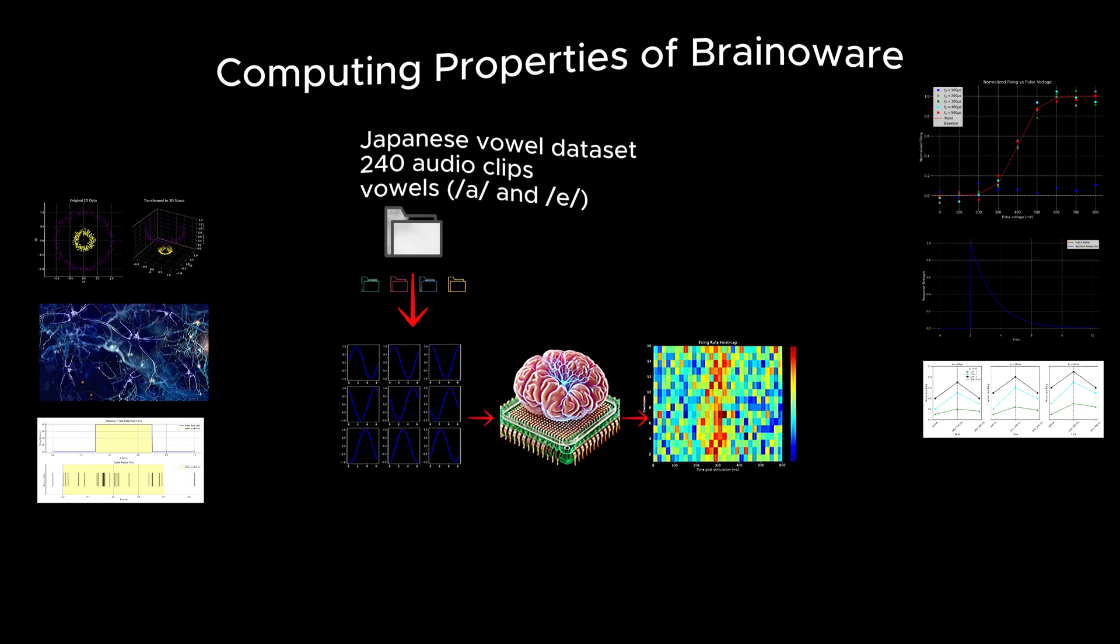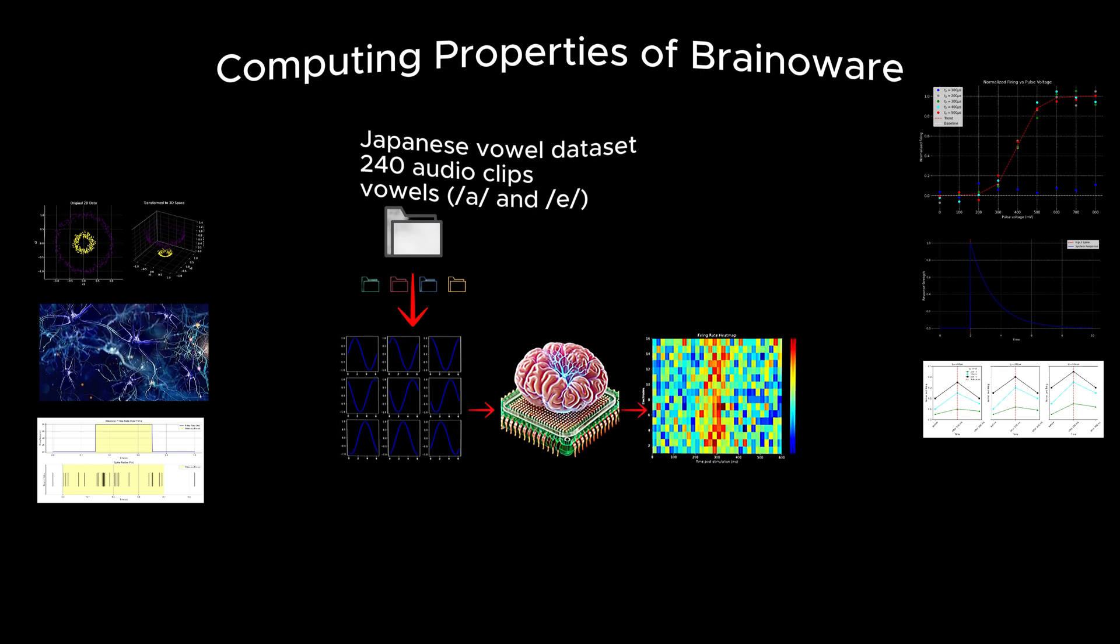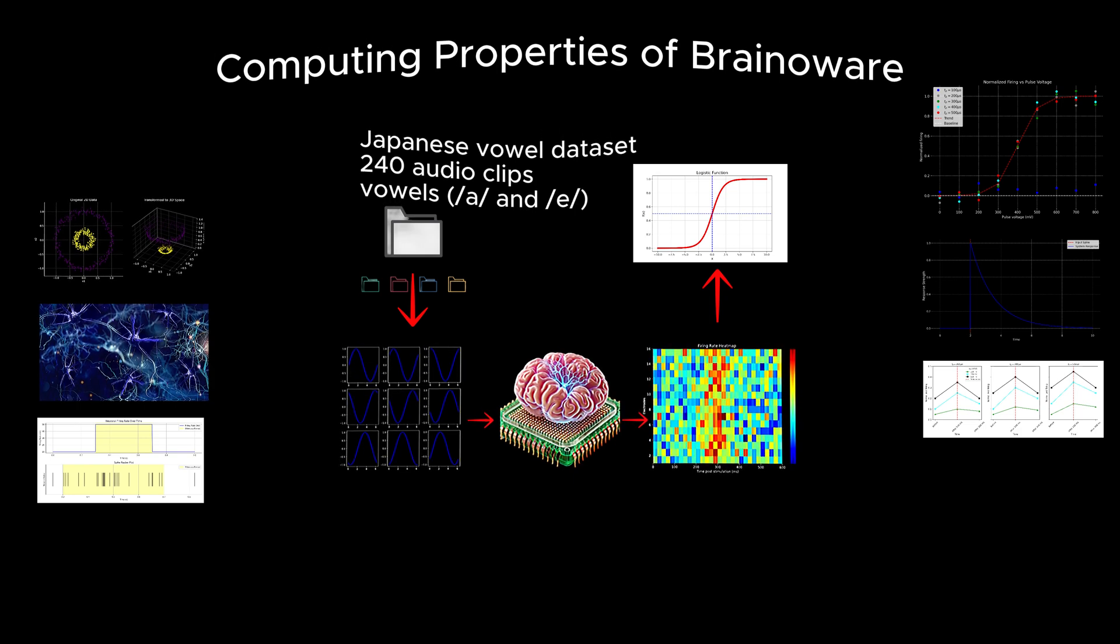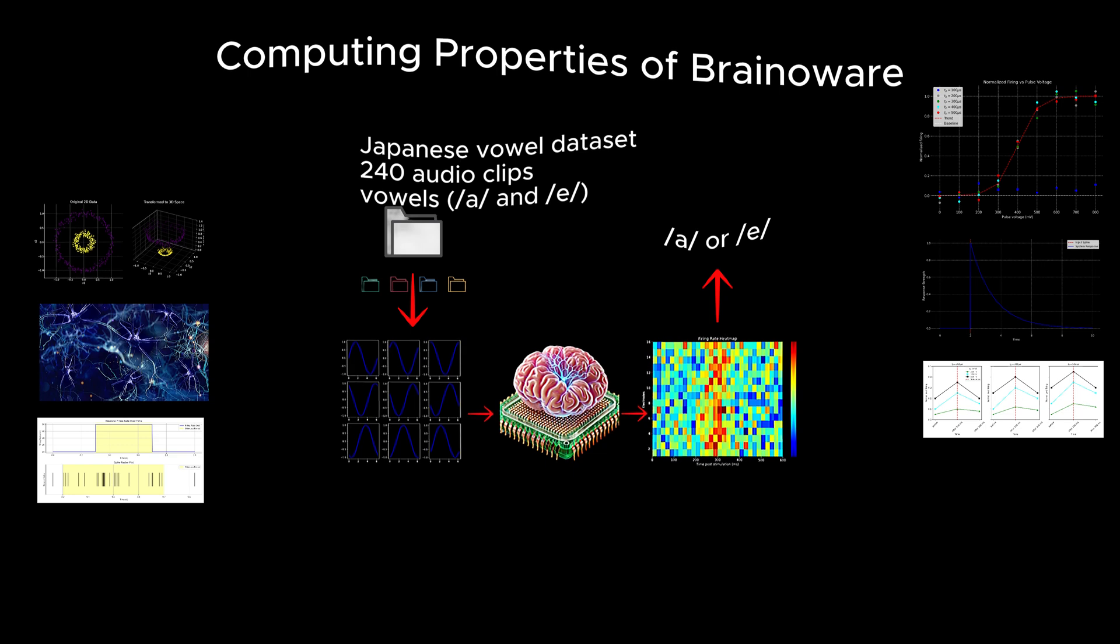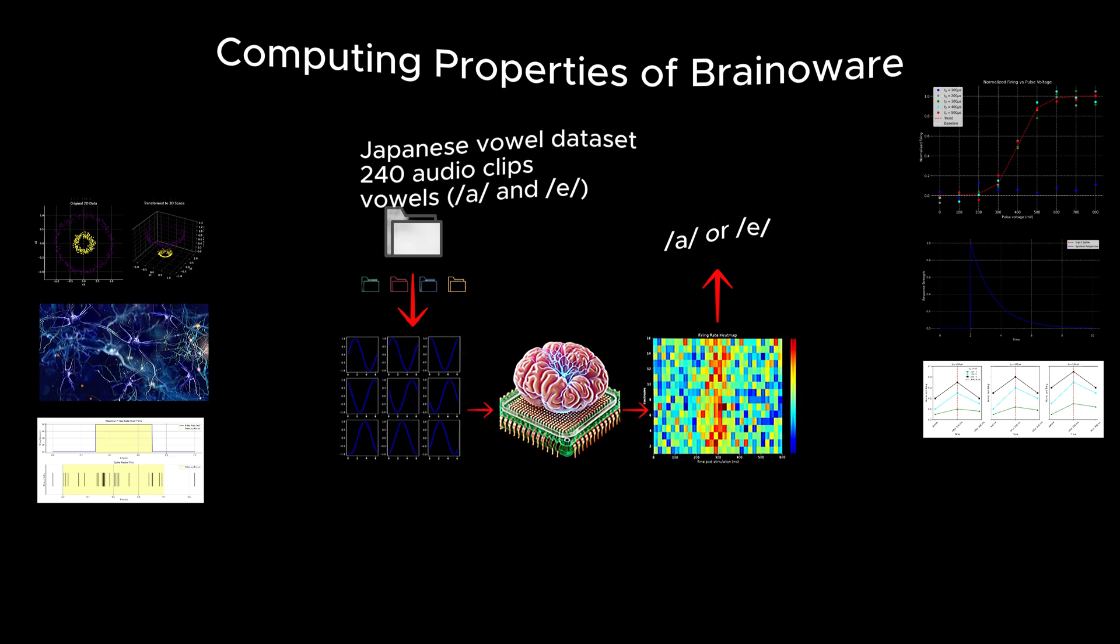The brain organoids' neural responses were recorded. The recorded activity was then processed and passed to a logistic regression function, a mathematical model used for classification tasks. This function interpreted the neural responses to classify the audio clips as either /a/ or /e/.